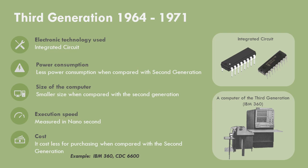3rd generation, 1964 to 1971. Integrated circuits were used as electronic technology. They consumed less power compared to 1st generation computers and had a smaller size compared to 2nd generation. Execution speed was measured in nanoseconds, and it cost less for purchasing compared to 2nd generation. Examples include IBM 360 and CDC 6600.